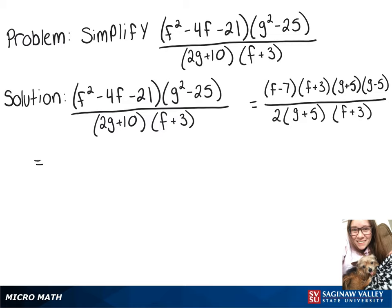Now we can write this as f plus 3 over f plus 3 times g plus 5 over g plus 5 times what we have left is f minus 7 times g minus 5 over 2.